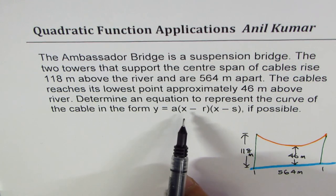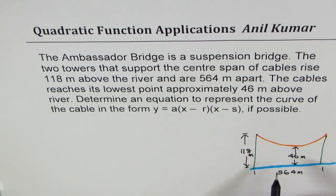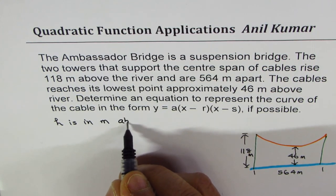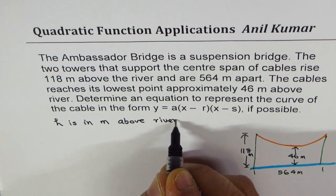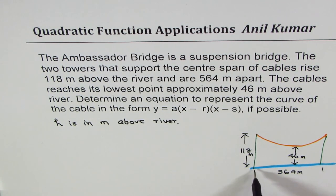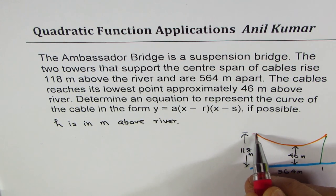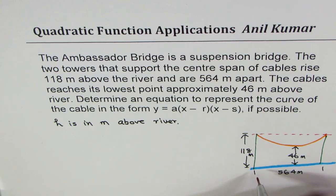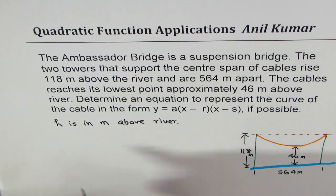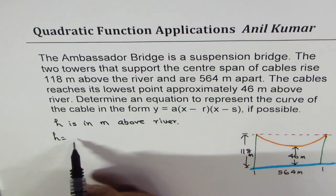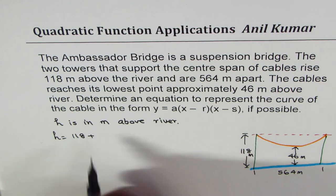We want to write an equation in factored form. Let height h be in meters above the river. To make factored form, I'm looking for zeros, because whenever you multiply these factors you get zeros. So I have to go up by 118. What I will do is write height h as equals to 118 plus all this. So we could do it like this: 118 plus... now we are at this level.